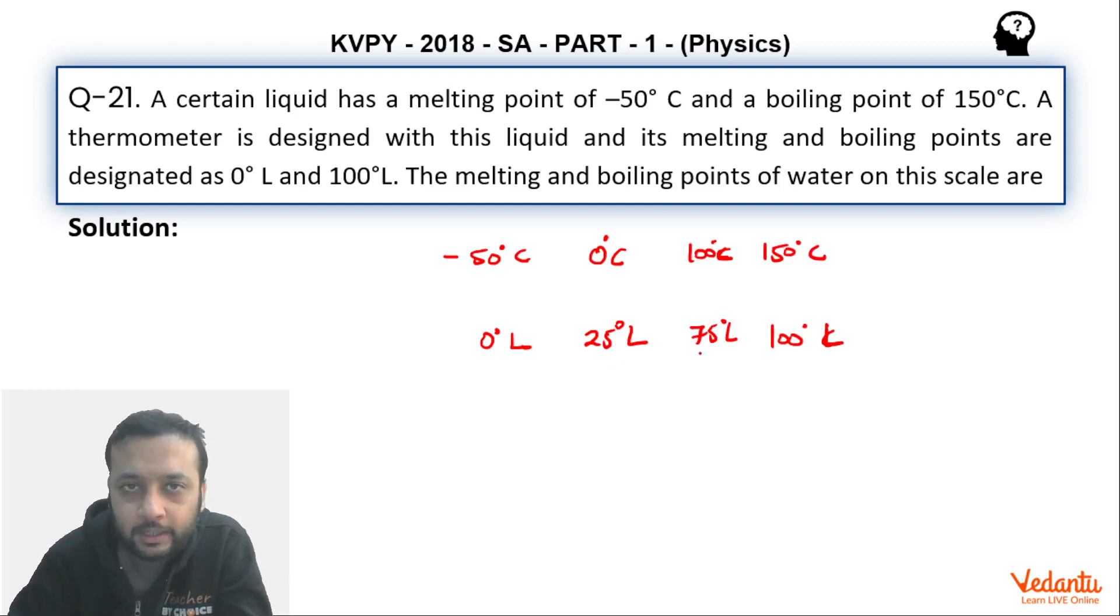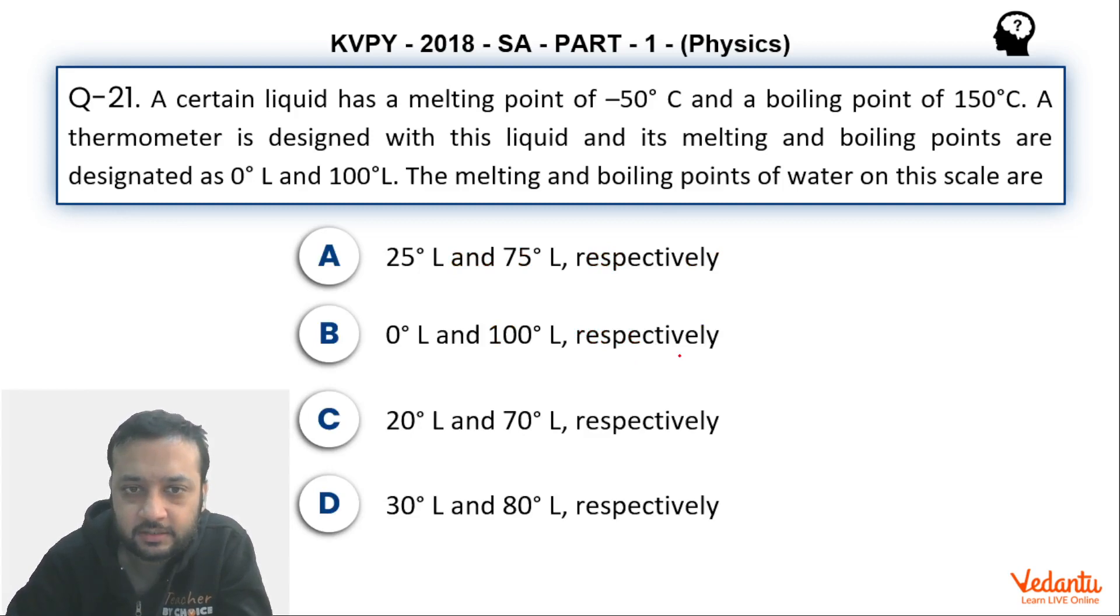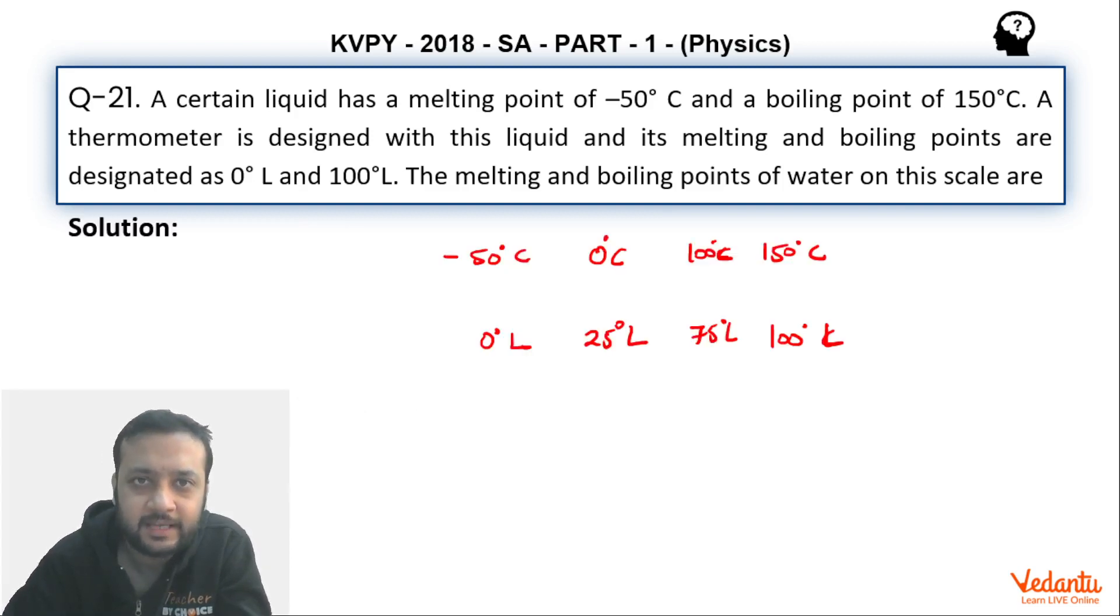So basically melting point of ice is 25 degree L and boiling point of water is 75 degree L. So correct answer should be 25 and 75 respectively. I hope you would have understood. A fairly simple question you can do this within 10 seconds. That's all friends.